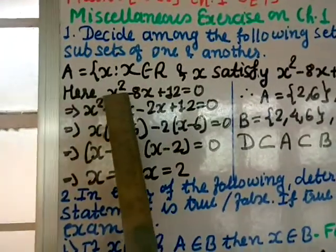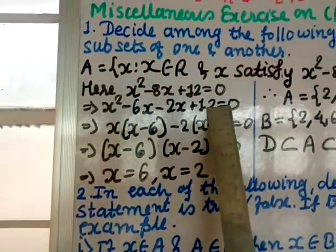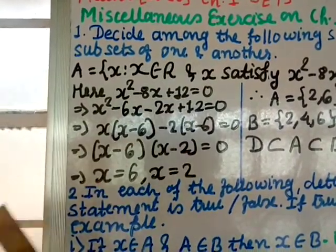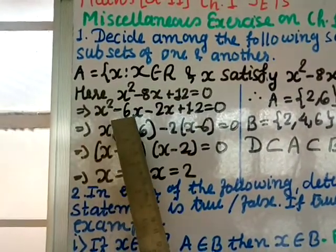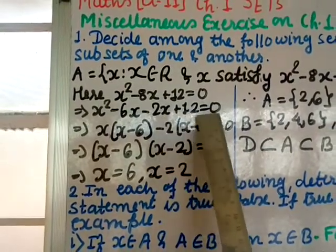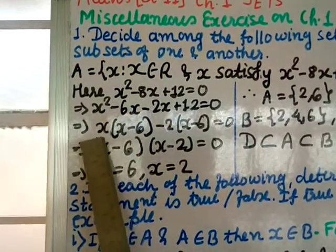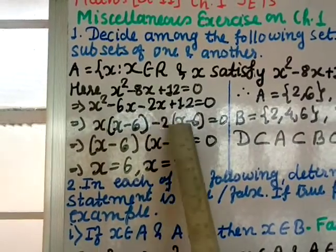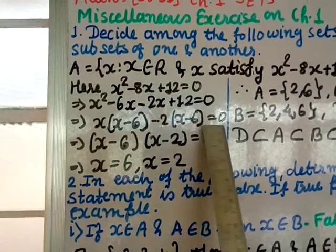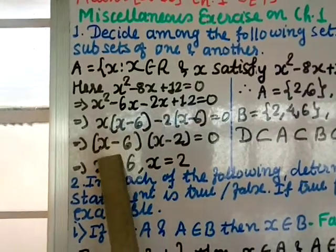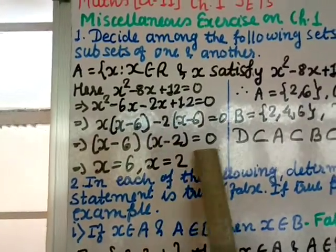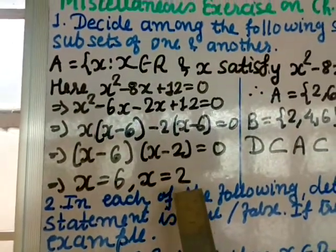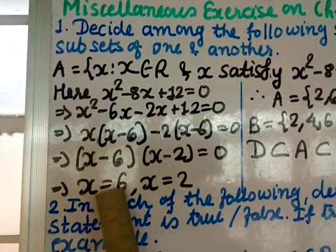We solve the quadratic equation: x² - 8x + 12 = 0. Split the middle term — factors of 12 that add to 8 are 6 and 2 — so x² - 6x - 2x + 12 = 0. Taking x common: x(x - 6), and taking 2 common: 2(x - 6), giving factors (x - 6)(x - 2) = 0. So x = 6 or x = 2, meaning A = {2, 6}.